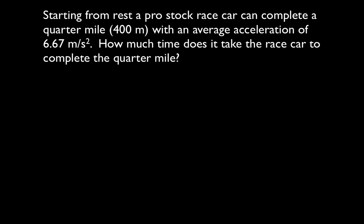Here's our first problem. Starting from rest, a pro-stock race car can complete a quarter-mile — that's about 400 meters — with an average acceleration of 6.67 meters per second squared. We want to know how much time it takes the race car to complete the quarter-mile. The first thing you should do — step number one — is to write down all five variables in the kinematic equation: initial velocity, final velocity, delta x (the change in position or distance), acceleration, and time.